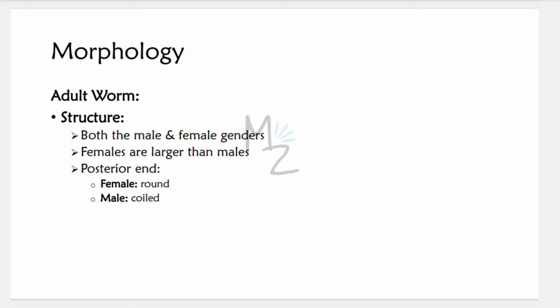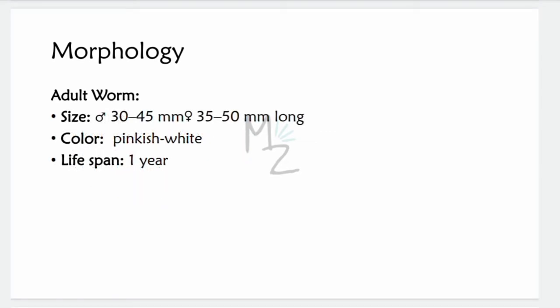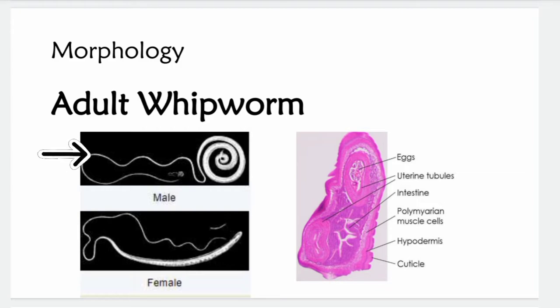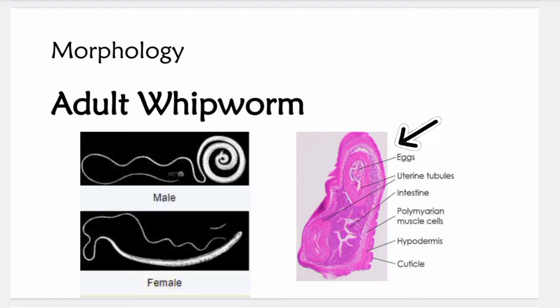In Trichuris trichiura, females are larger than males. The posterior end of females is round and that of males is coiled. The size of the male is 30 to 45 millimeters and that of the female is 35 to 50 millimeters. They are pinkish or white in color, and the lifespan of adult worms is about one year. Looking at the structure: on the left is the male whipworm and on the right is the female, which is larger with a round posterior. The internal structure of the female includes eggs, uterine tubules, and intestine.